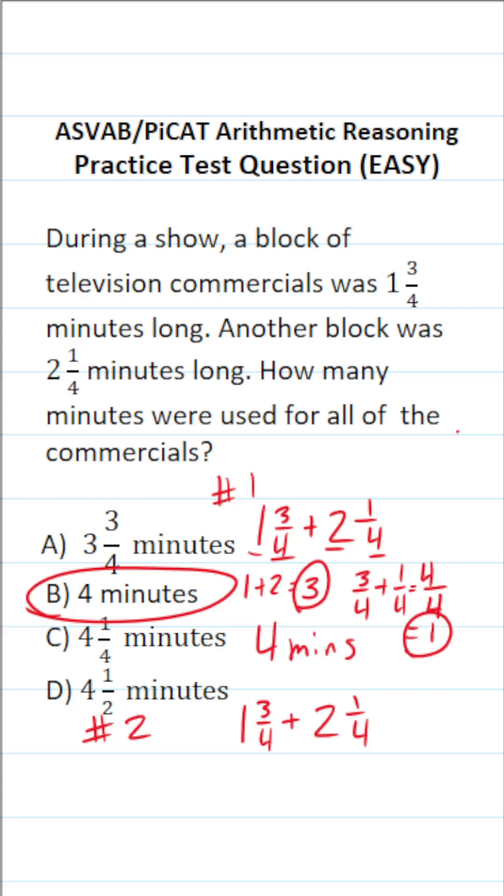Now the traditional approach says convert these mixed numbers to improper fractions. So we're going to do one times four, which is four, plus three, which is seven. So this is seven over four as an improper fraction. Two times four is eight, plus one is nine. So this is nine over four as an improper fraction.